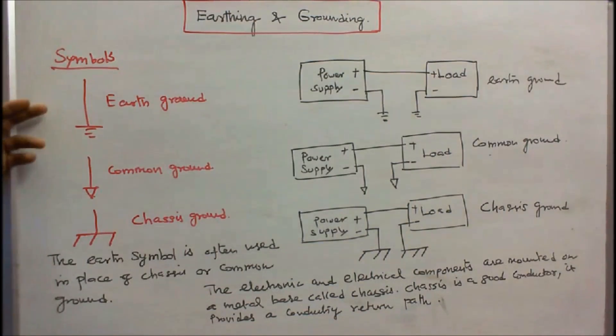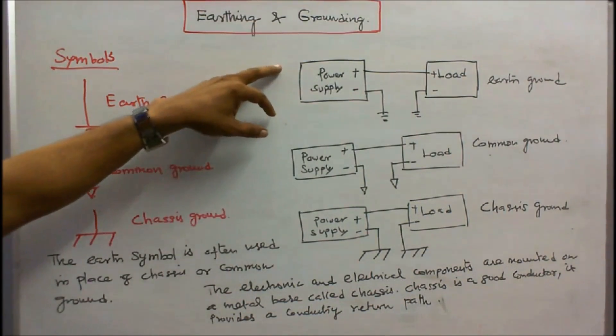This is a symbol for earth ground, this is for common ground, this is for chassis ground. The electronic and electrical components are mounted on a metal base called chassis. Chassis is a good conductor. It provides a conducting return path.